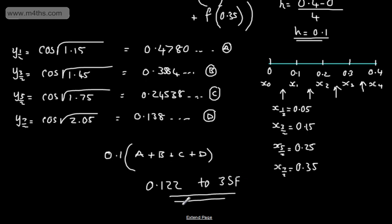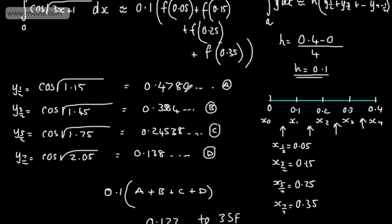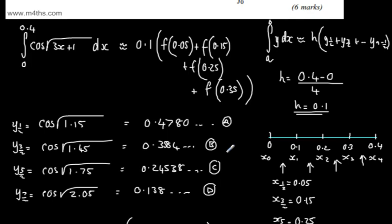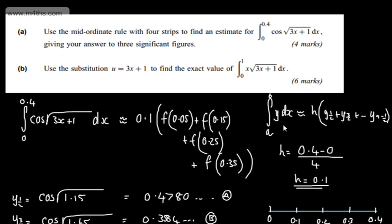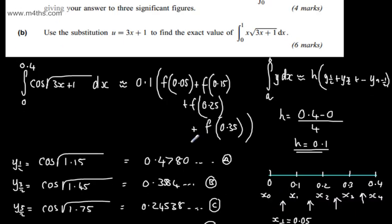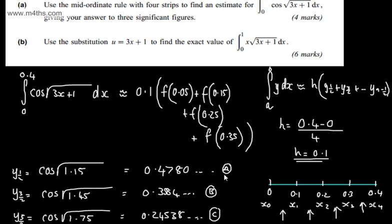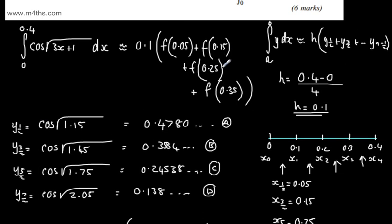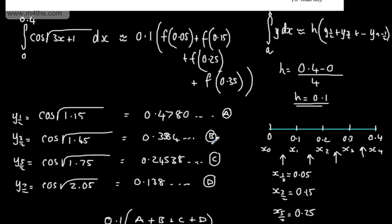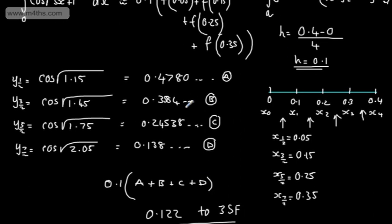So essentially what we're doing is: find h using (b − a) / n where n is the number of strips; identify x₀, x₁, x₂, x₃, x₄; find the mid-ordinates; plug those into the function to get the corresponding y-coordinates; and sum them using the formula. It's relatively straightforward once you can find these values.